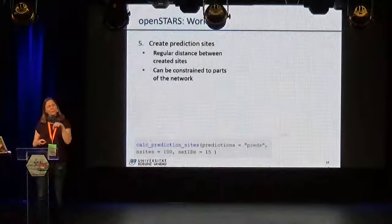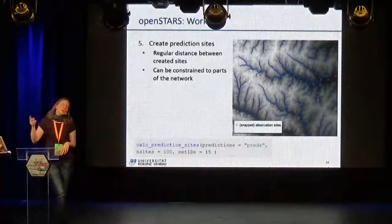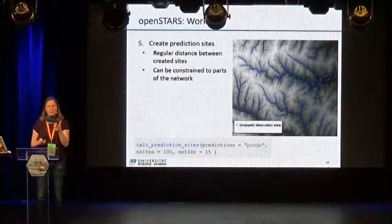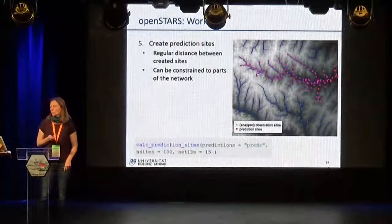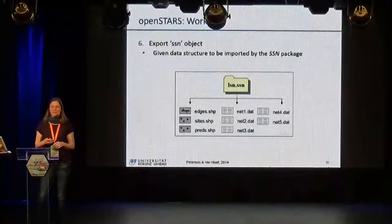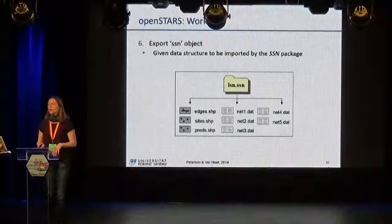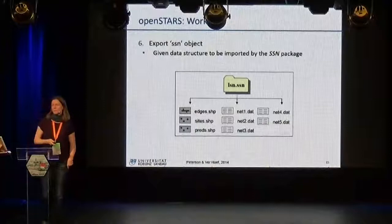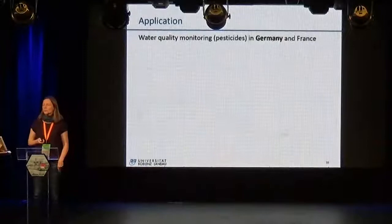The next step is to create prediction sites — points where you want to do predictions once you have your regression model — and you can choose on which part of the network you do this, how many sites you want, or how far apart they should be. Here I restricted the prediction sites to the upper part of this network. Finally, you export all the objects you have created to a so-called SSN object — this is the data structure given by the SSN package that it is able to read in.